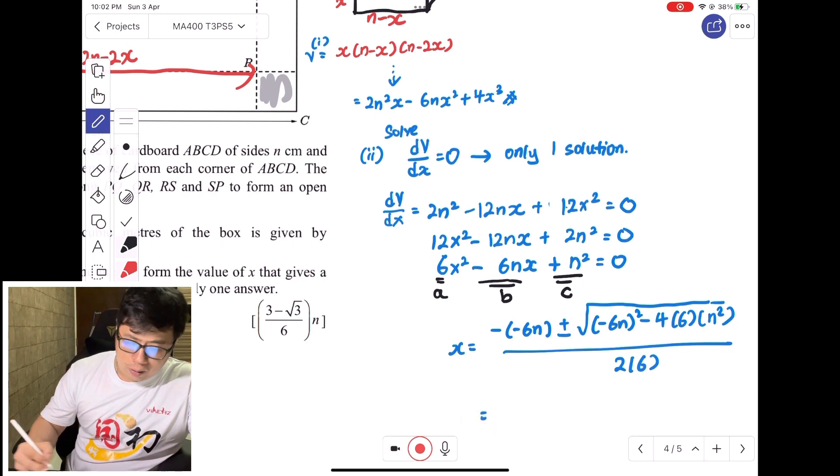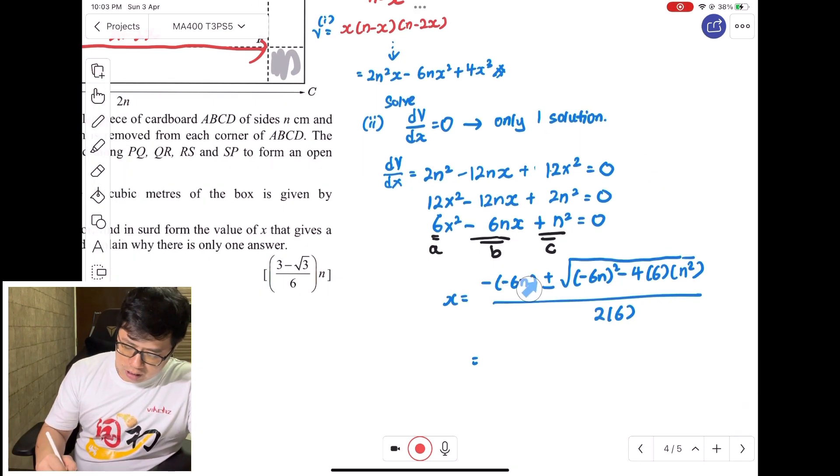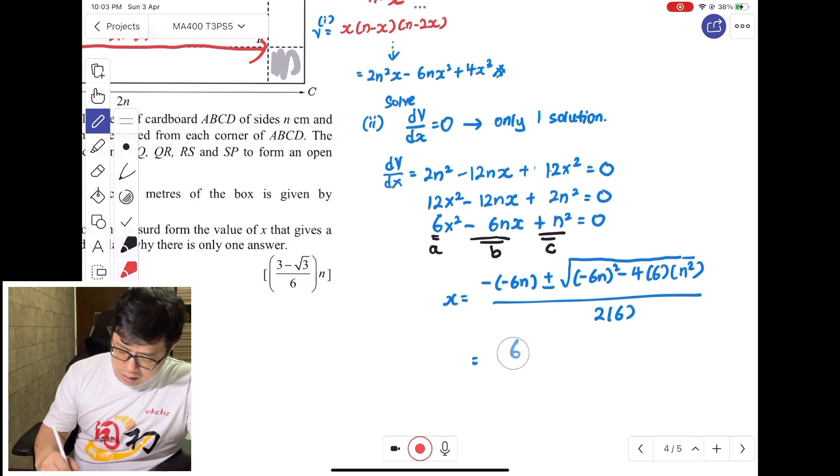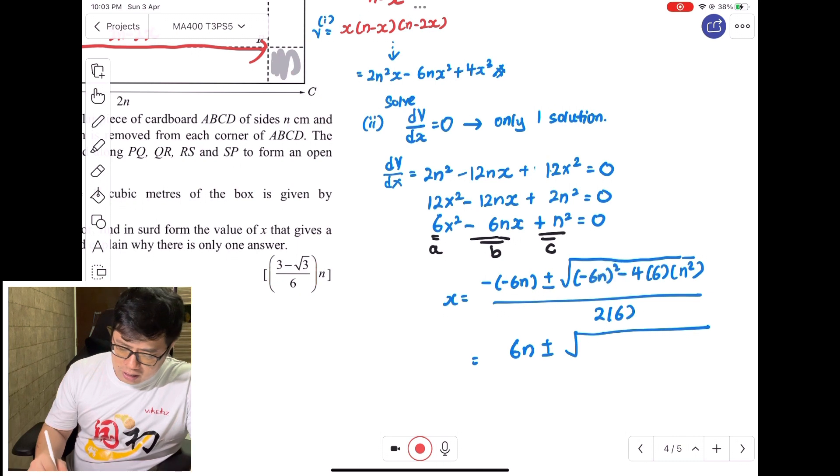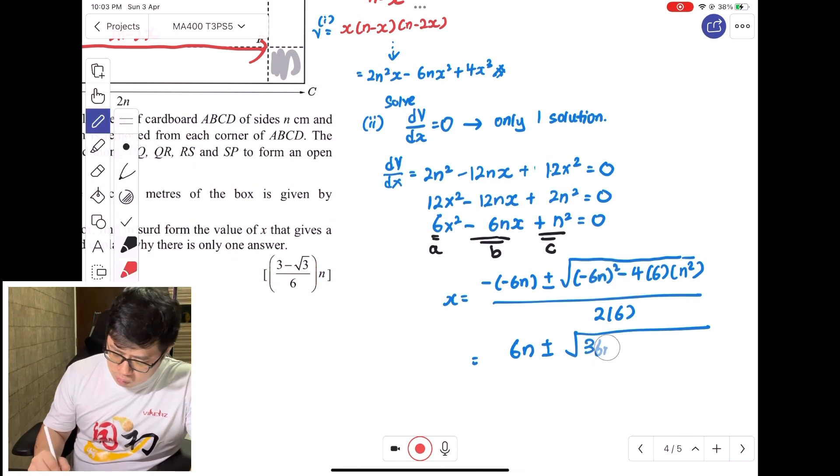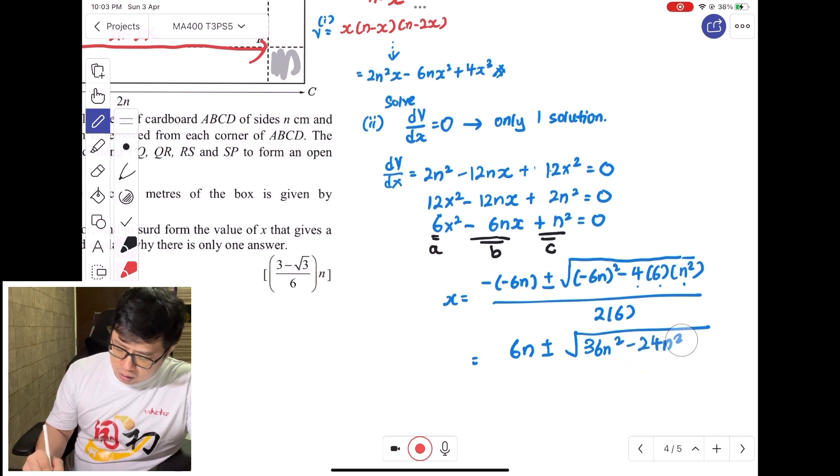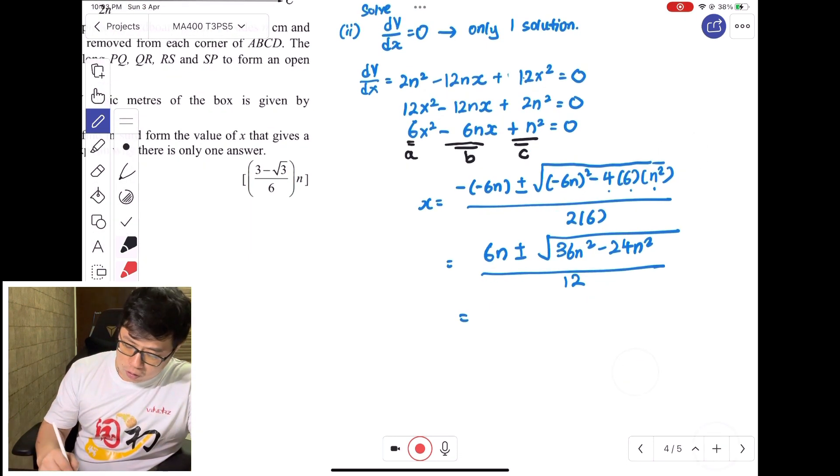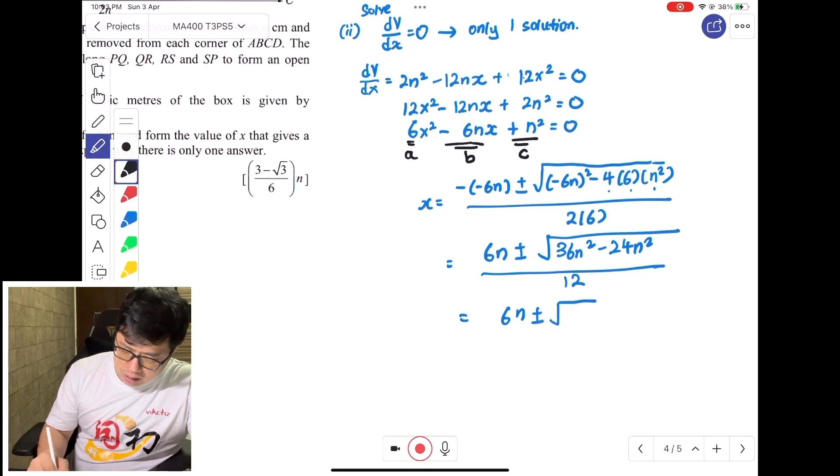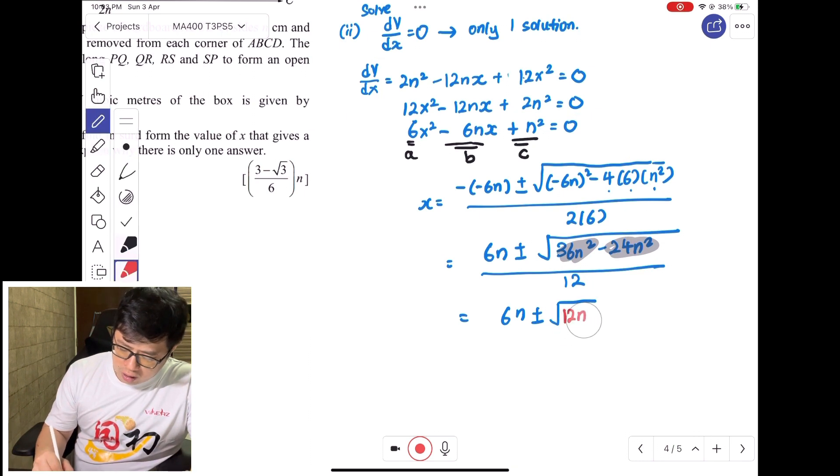Now simplify: negative negative 6N gives me 6N. 6N squared gives me 36N², 6 times 4 times N² gives me 24N², the denominator is 2 times 6 which gives me 12. This gives me 6N ± √(36N² - 24N²) which is 6N ± √12N² over 12.